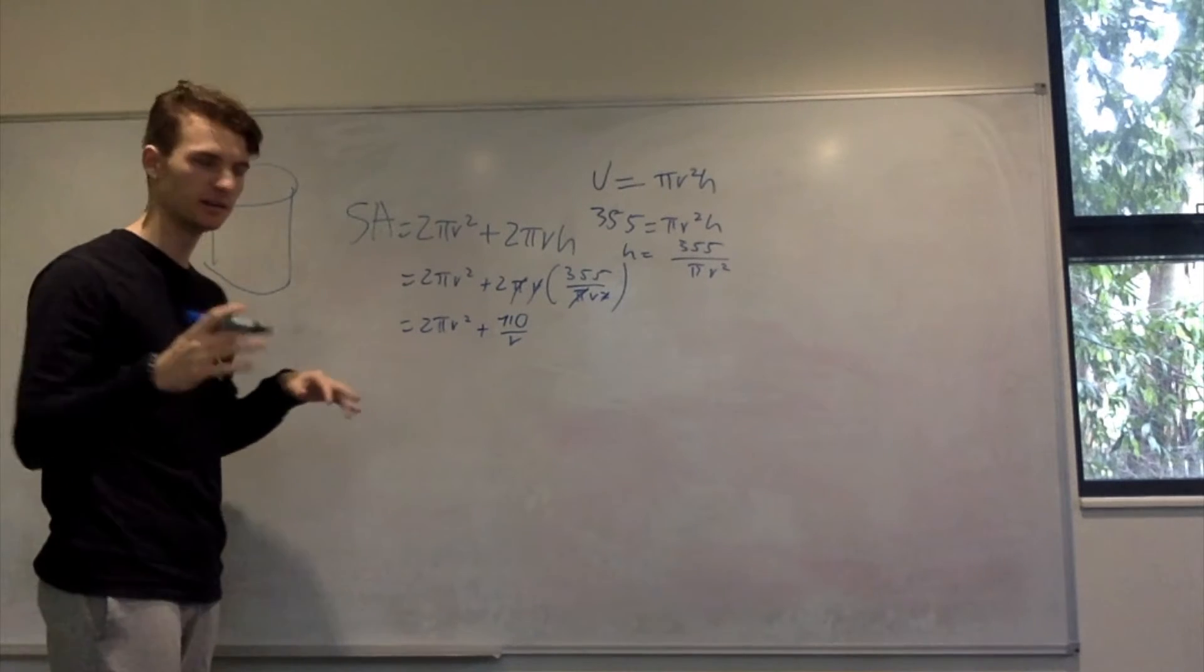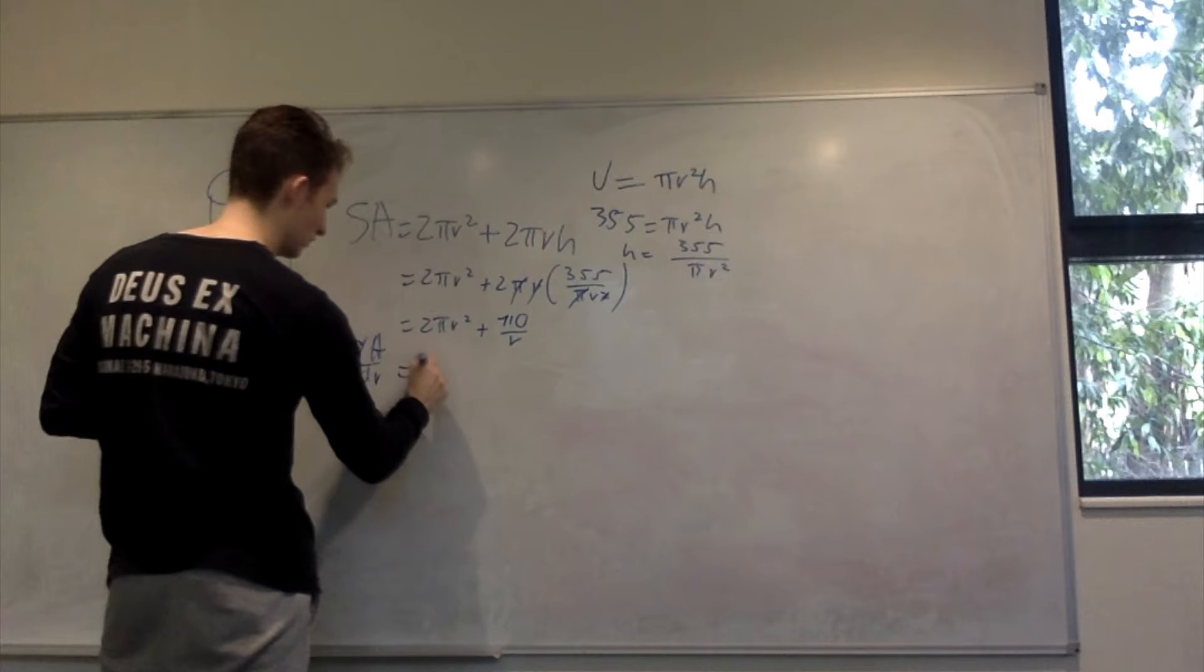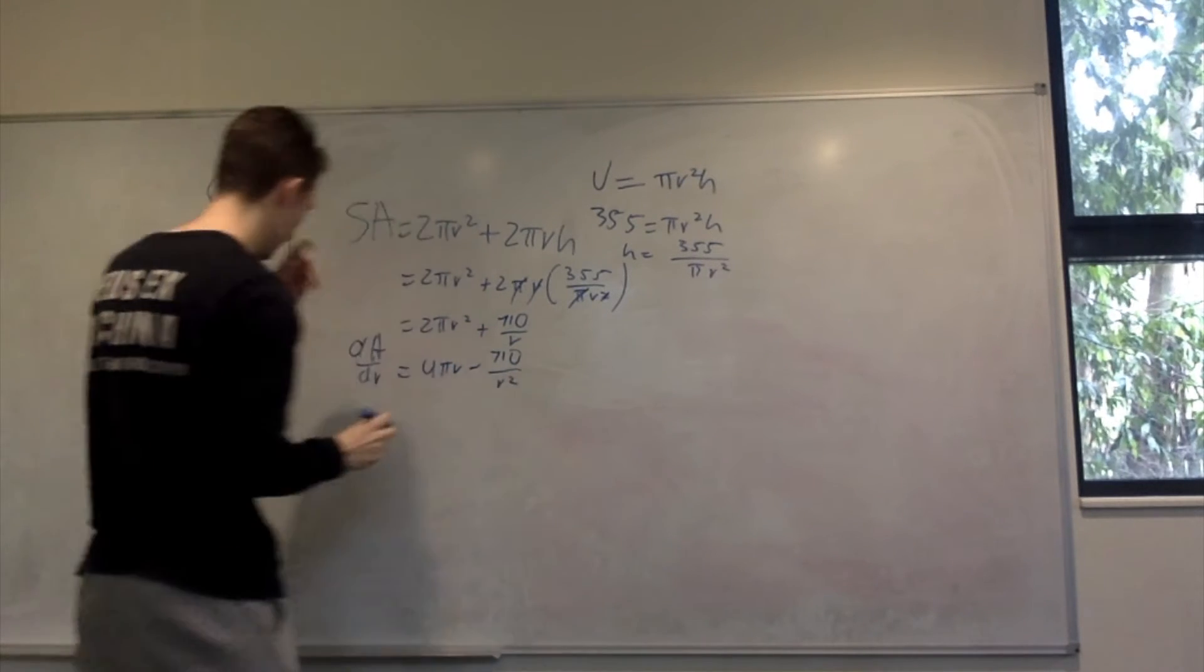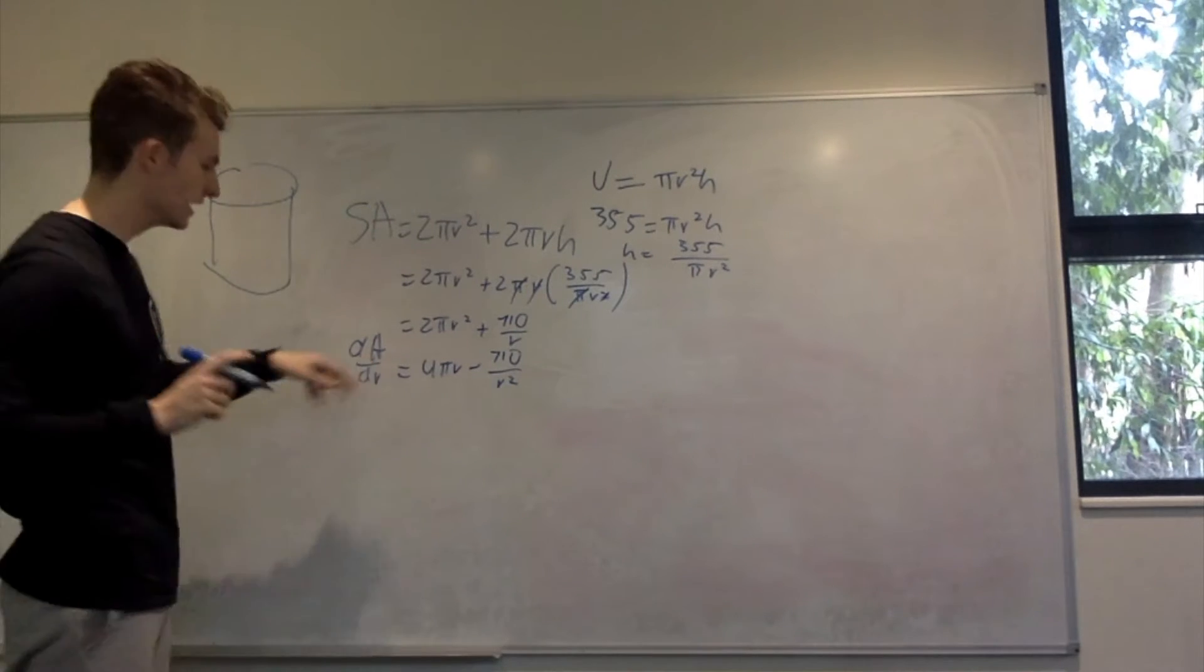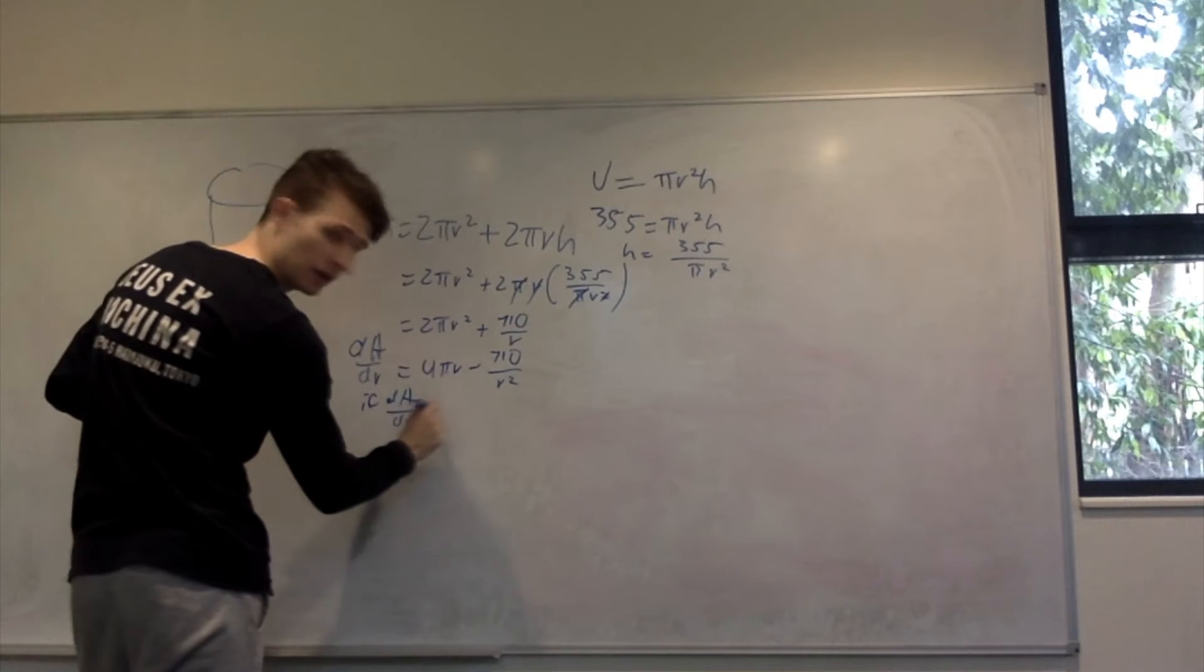If we're going to find the minimum, we need to differentiate it. So dS/dr = 4πr minus 710/r². For a minimum, dS/dr = 0.